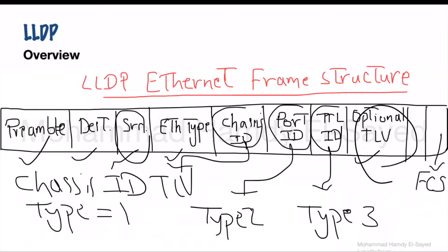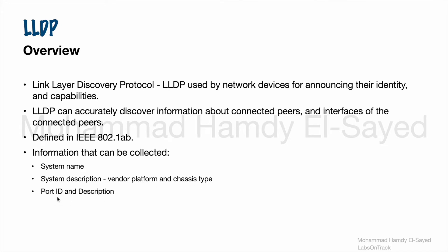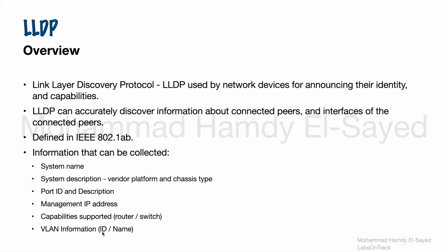The optional TLVs can be port description, system name, system description, system capabilities, management address, and any custom TLVs. These are all the TLVs that can be contained in the LLDP Ethernet frame structure, so the peers can discover information about the sending device. Information that can be collected by LLDP includes: system name, system description (vendor, platform, and chassis type), port ID and description, management IP address, capabilities of the connected peer (router, switch, IP phone, etc.), VLAN information such as ID and name, and link aggregation information.